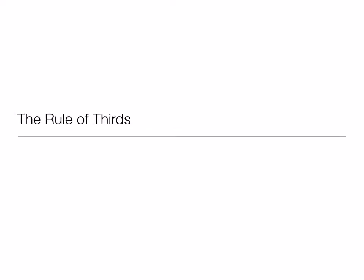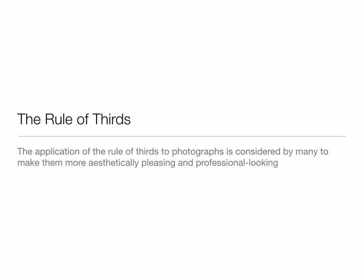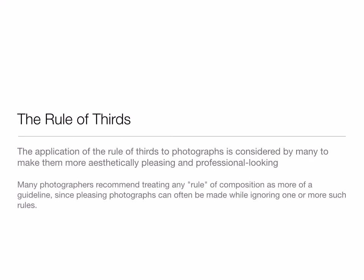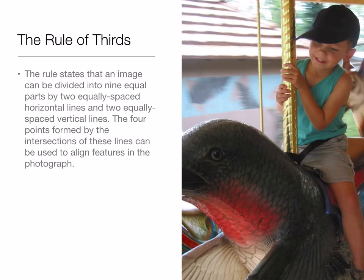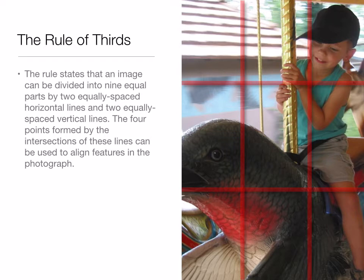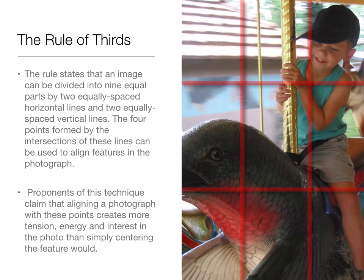We're going to start with the rule of thirds, which we've talked about before — it's the intersecting lines and the placement of a subject within those lines. In the rule of thirds, an image can be divided into nine equal parts by two equally spaced horizontal lines and two equally spaced vertical lines. Where the lines intersect is generally the best point of interest for your picture. Being close to the line and out of the center makes the picture more interesting and appealing to the viewer.